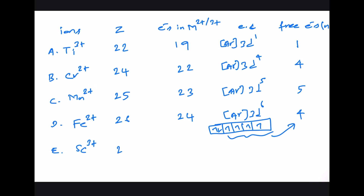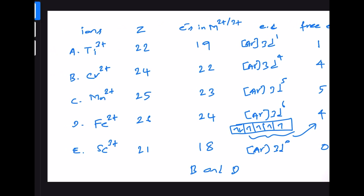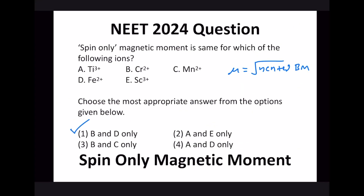For Sc³⁺, the atomic number of scandium is 21. In Sc³⁺ there are 18 electrons, giving an electronic configuration of 3d⁰ with no unpaired electrons. Therefore, the correct answer is B and D — Cr²⁺ and Fe²⁺ both have 4 unpaired electrons and hence the same spin only magnetic moment.